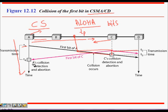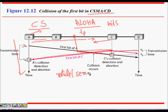At t4 the collision signals reach A, and A detects the collision. Collision detection happens continuously while sending — it's a loop: while you are sending, you are also detecting collision. So if any collision is detected, the node knows about it in real time.